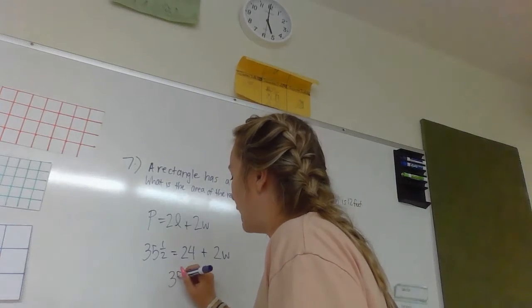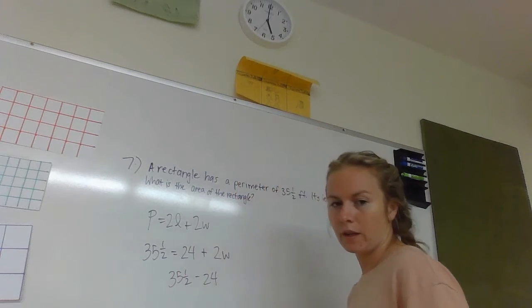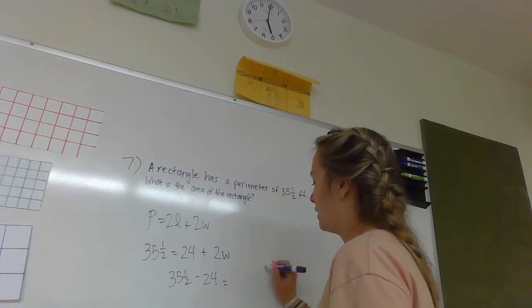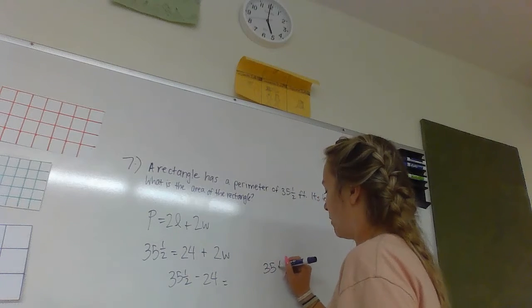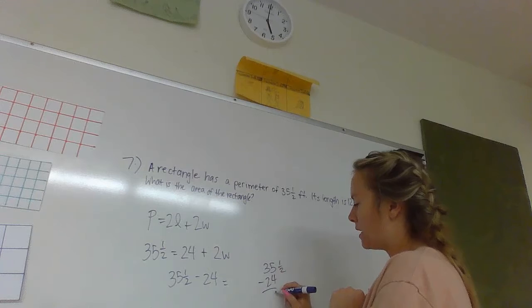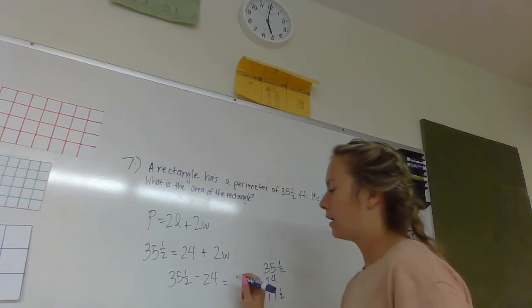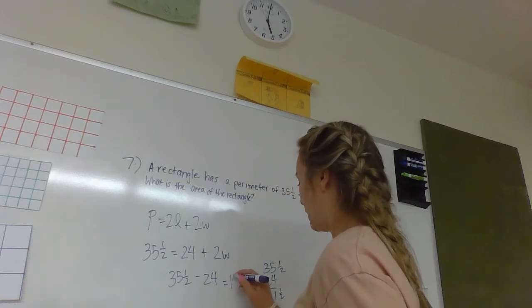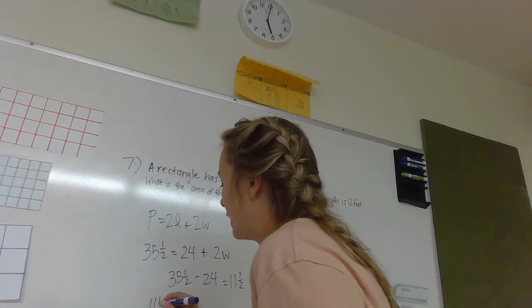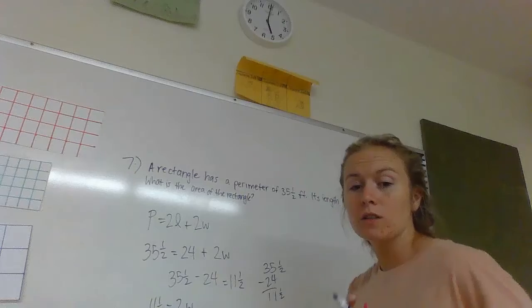So 35 and a half minus 24. Okay, I'm going to do it this way because it'll help me. Okay, 5 minus 4 is 1, 3 minus 2 is 1, and that would be a half. Okay, so it would be 11 and a half.